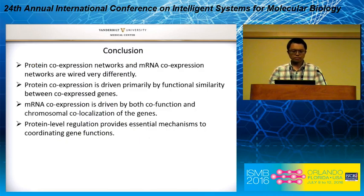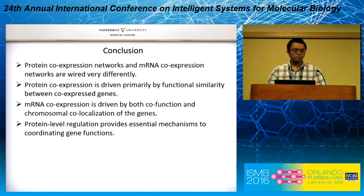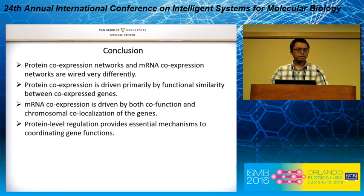In conclusion, protein co-expression networks and mRNA co-expression networks develop very differently. The protein co-expression network is driven primarily by co-function, while the mRNA co-expression network is driven by both co-function and chromosomal co-localization. Protein-level regulation provides essential mechanisms for coordinating gene functions.